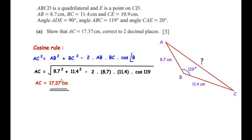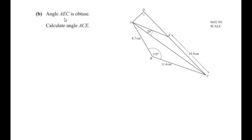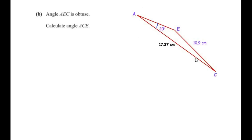For the next part: angle AEC is obtuse — calculate angle ACE. Let us consider triangle AEC. In this triangle, angle A is 20°, the length AC is 17.37 cm, and the length EC is given as 10.9 cm. The hint states that angle AEC is obtuse, but we need to find the missing angle ACE.